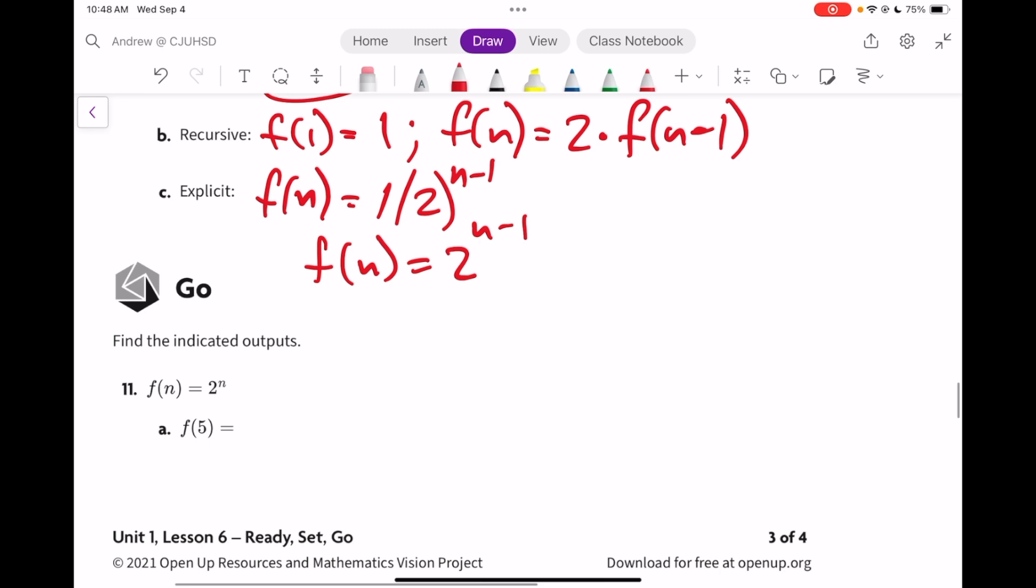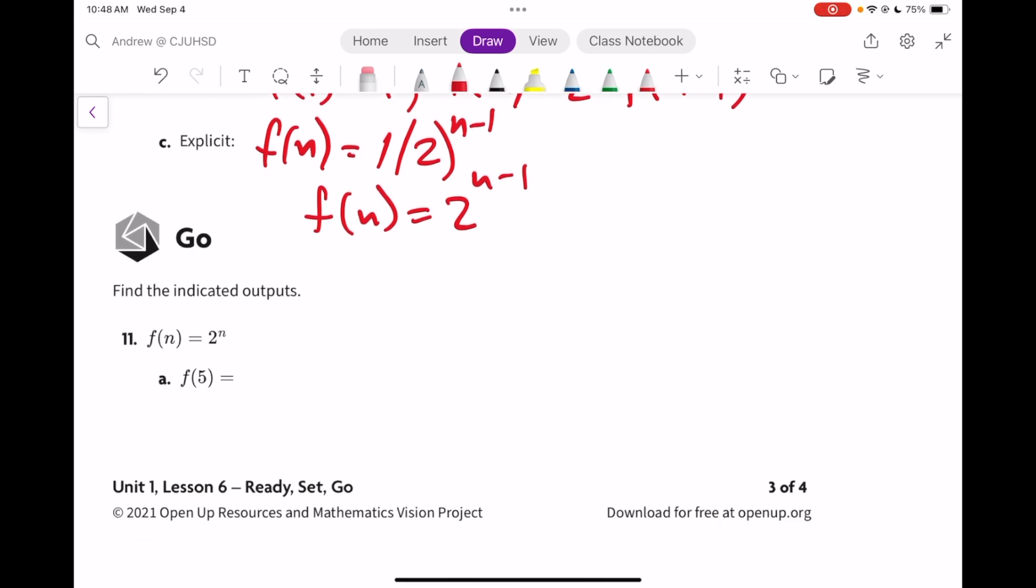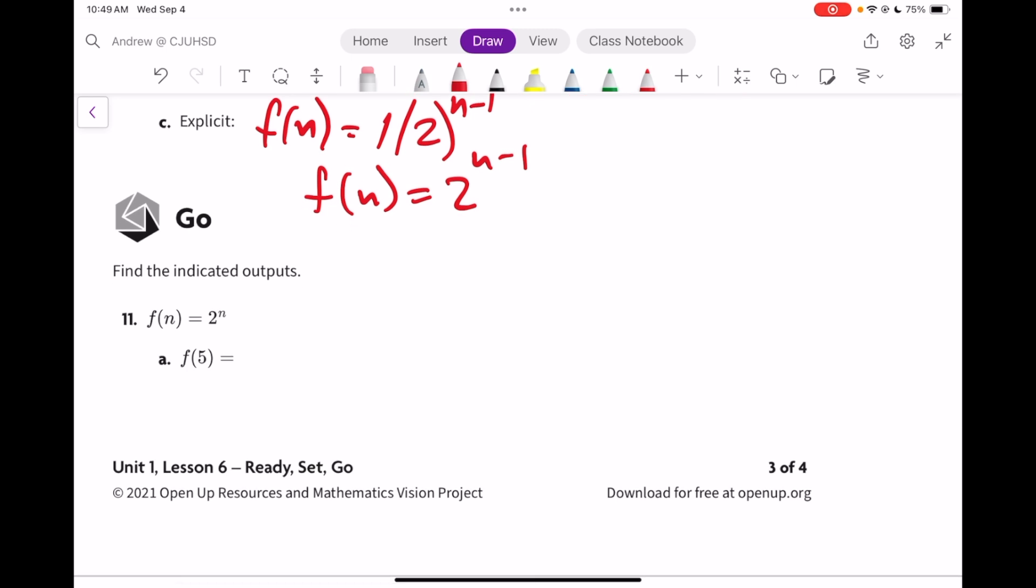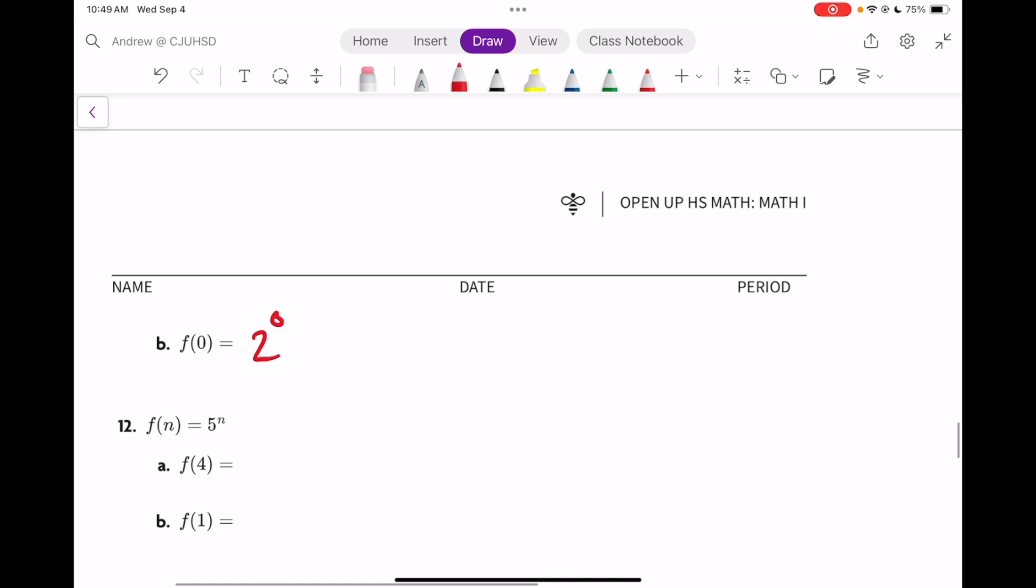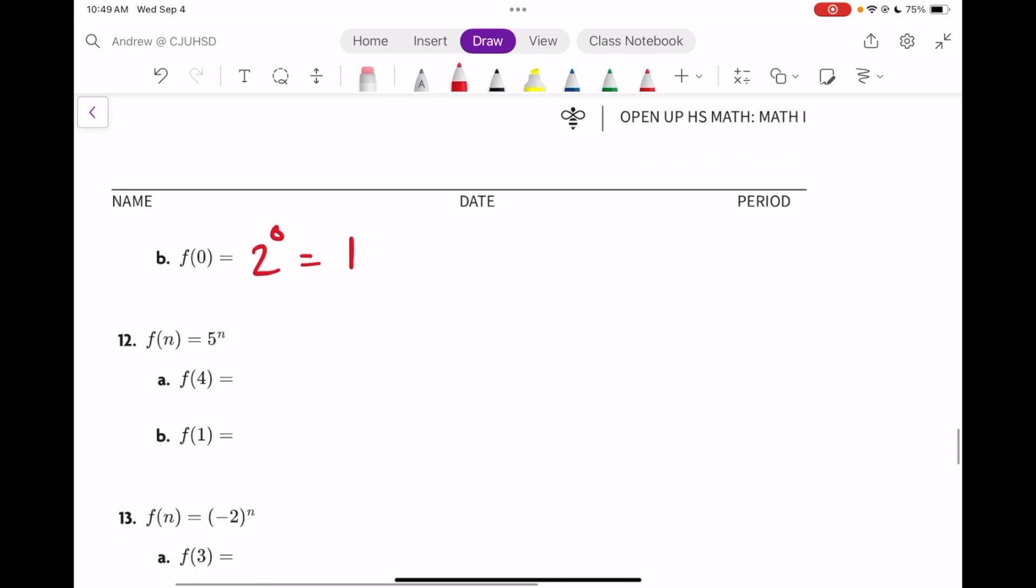And finally in the go section, we're just practicing evaluating functions at different values. Part a is 2 to the 5th, or 32. And then remember, take a number to the 0 power and it's equal to 1. f(4) means 5 to the 4th. That's 25 times 5, 125 times 5, 625. f(1) means 5 to the 1, it's just 5.